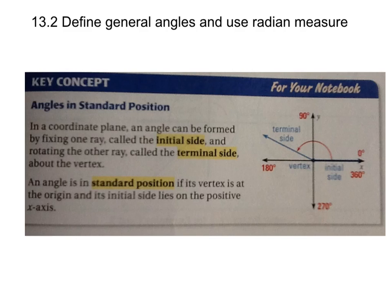Hey Algebra 2 students, we are in section 13.2. I've copied the key concept on your page 859 in your Algebra 2 book. In a coordinate plane, an angle can be formed by fixing one ray called the initial side and rotating the other ray called the terminal side. An angle is in standard position if its vertex is at the origin and its initial side lies on the positive x-axis.